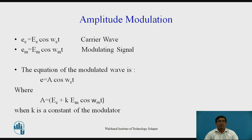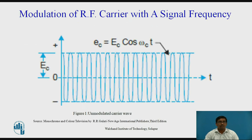Now we look at amplitude modulation. The first equation — EC = EC·cos(ωC·t) — is the equation for the carrier wave. The second equation — EM = EM·cos(ωM·t) — is the equation for the modulating signal. The equation of the modulated wave is E = A·cos(ωC·t), where A = EC + K·EM·cos(ωM·t). EC means carrier wave and EM means modulating wave, where K is a constant of the modulator. Figure one shows the unmodulated carrier wave, where no message signal is present — only the carrier signal — represented by EC = EC·cos(ωC·t).